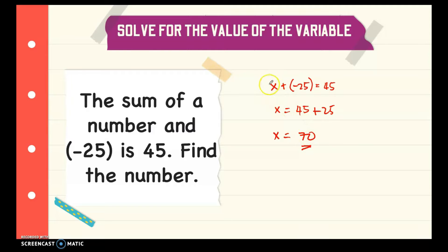If you want to check that the answer is correct, we substitute x with 70, so we have 70 plus negative 25, which equals positive 45.